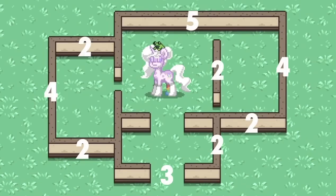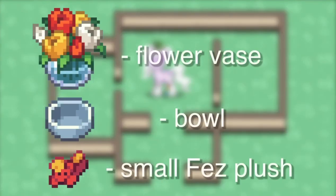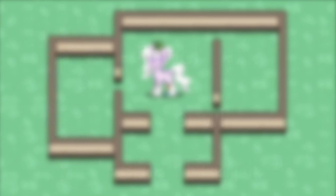To make this challenge a bit more interesting, I've added a rule where you must use these three items in your build. You can place them anywhere you want and color them however you want — they just have to be somewhere in your build. Make sure you can clearly see the item, but you can use it in any way you want.